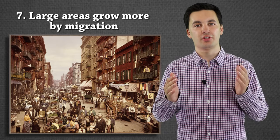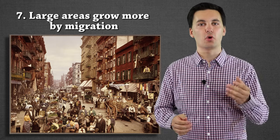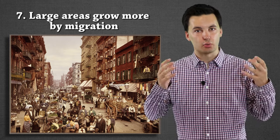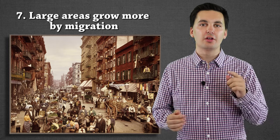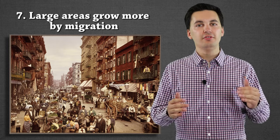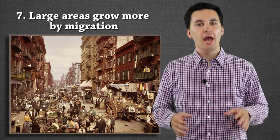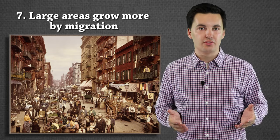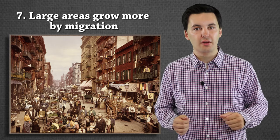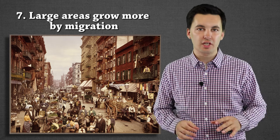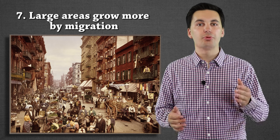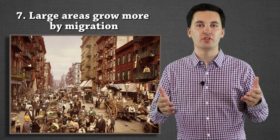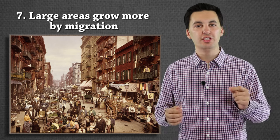The next law looks again at urban areas and large cities. Ravenstein noticed that areas with really large populations are going to grow more through migration and less through natural births. As we know from the demographic transition model and other population trends, it becomes more expensive to have children in urban areas, so people start having fewer kids. These urban areas then start to grow through migration, making immigration really important for them to continue seeing growth — otherwise, we start to see a population decrease.